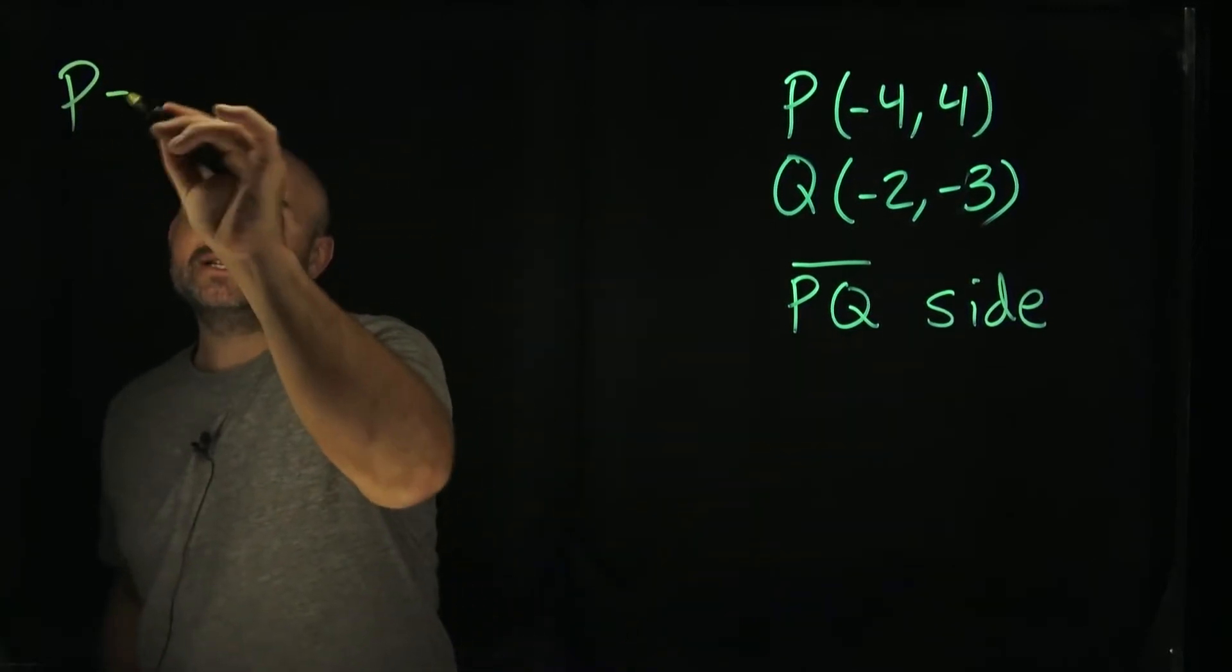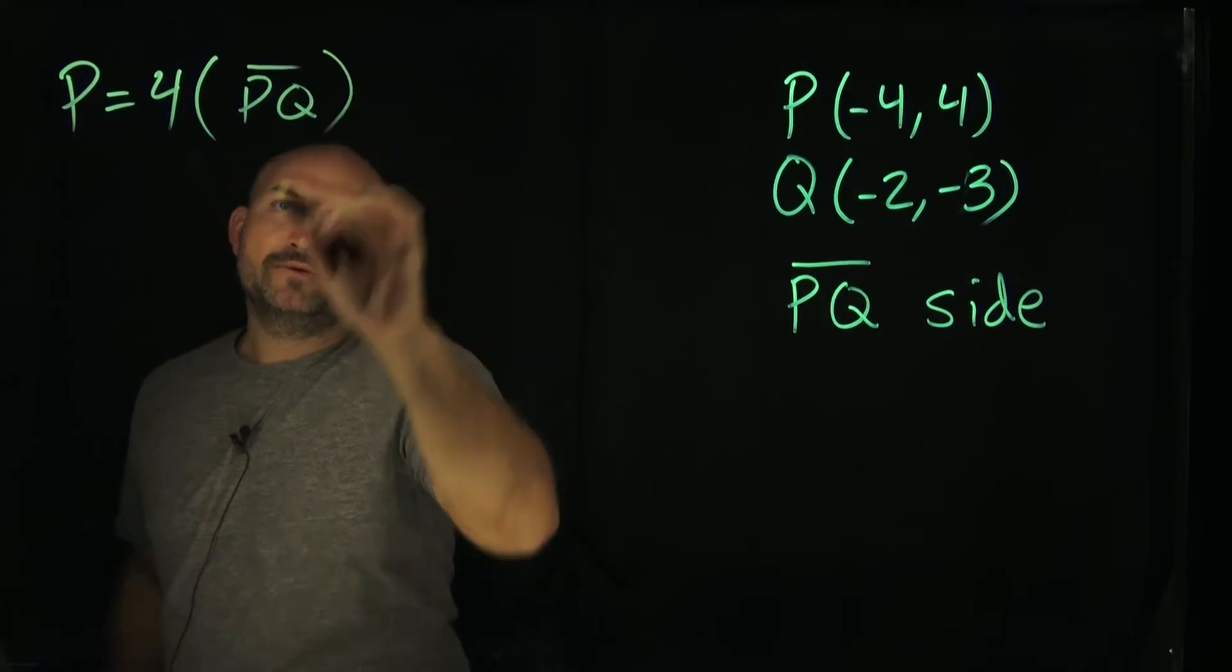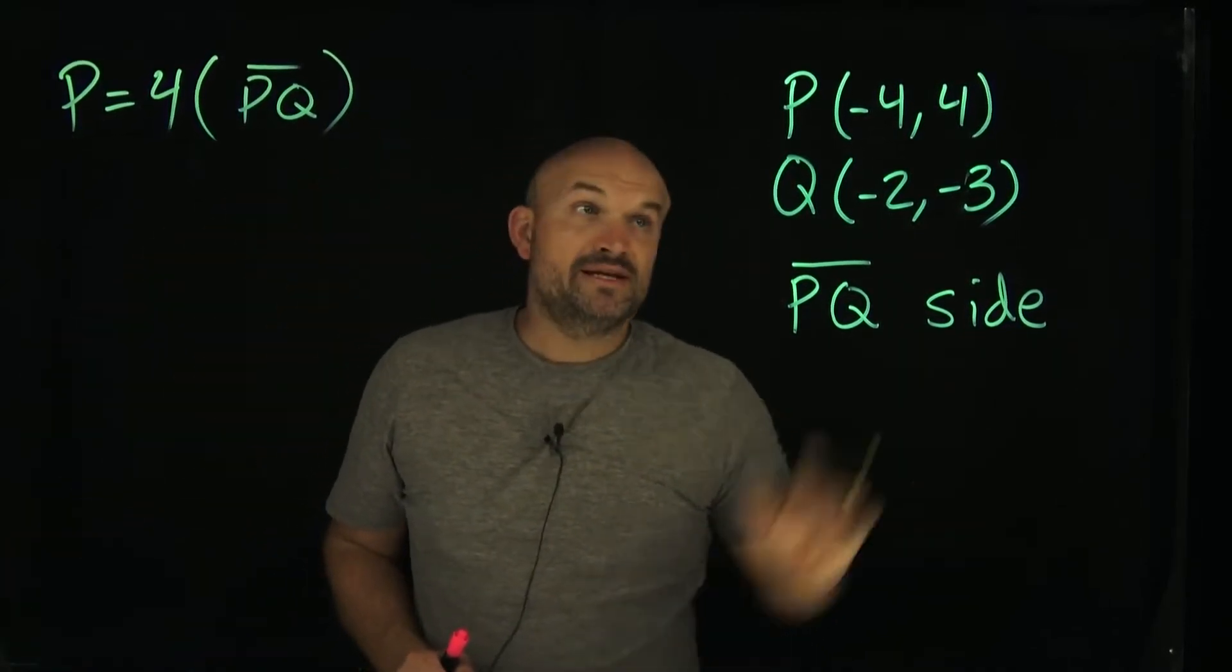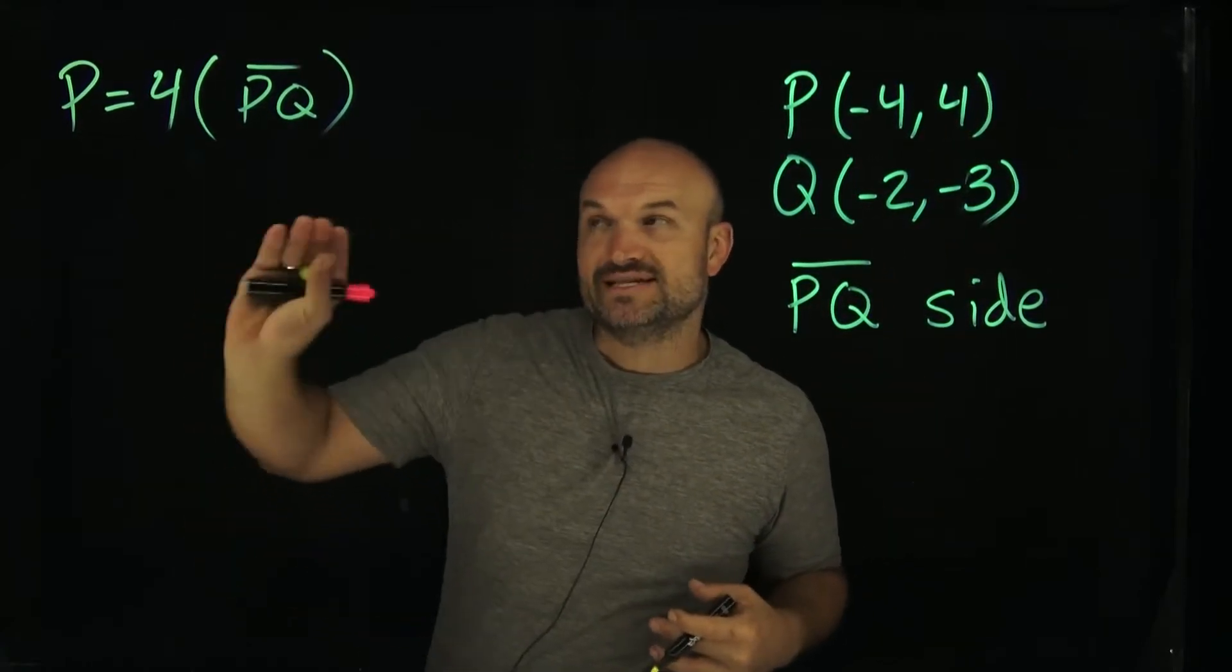So we can say that the perimeter of my square is going to equal four times the distance of this PQ. So we got to figure out what PQ is. Therefore, we need to know what the distance formula is. We're given two points, so if we need to find the distance between two points, we have to know this distance formula.